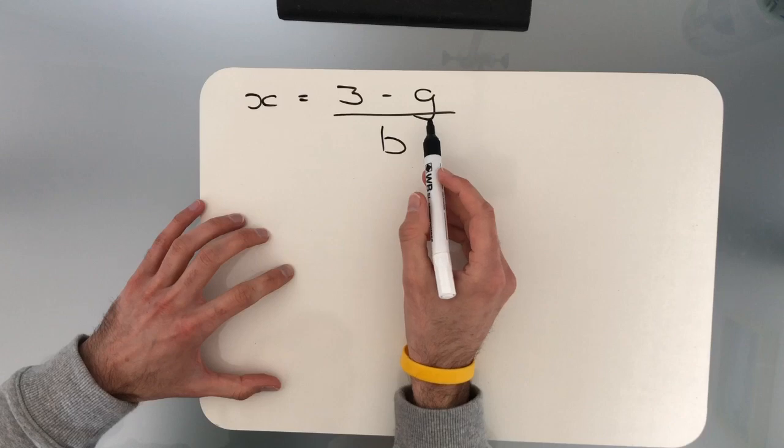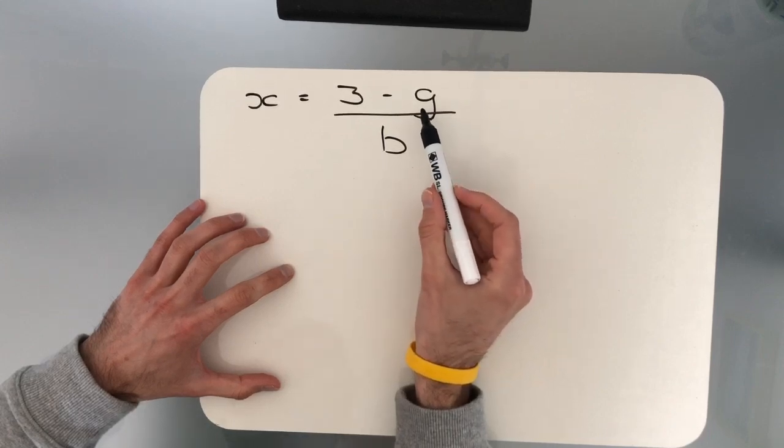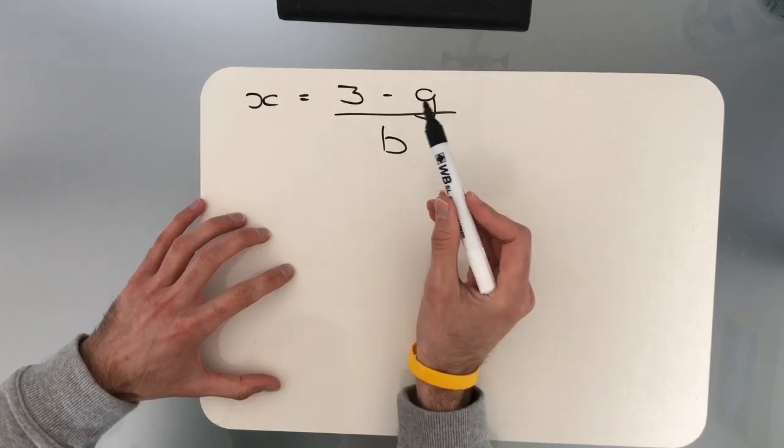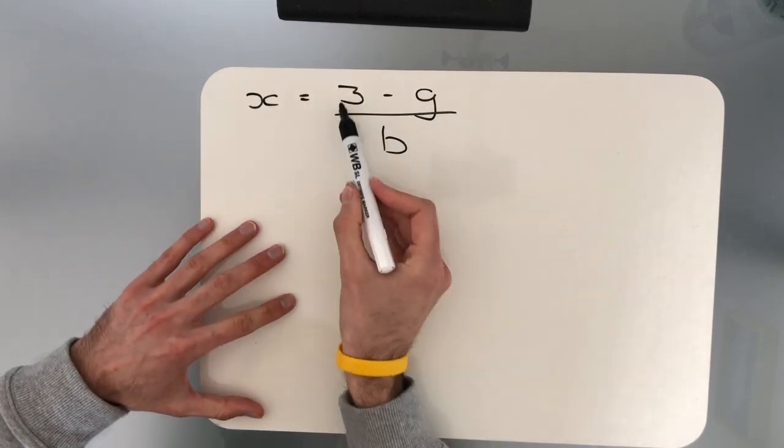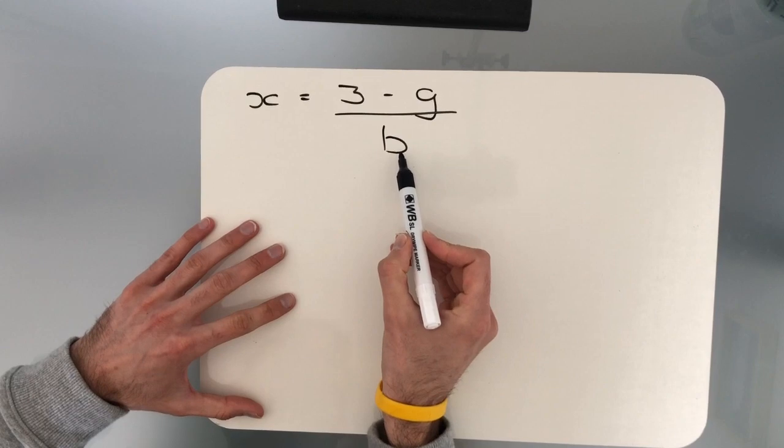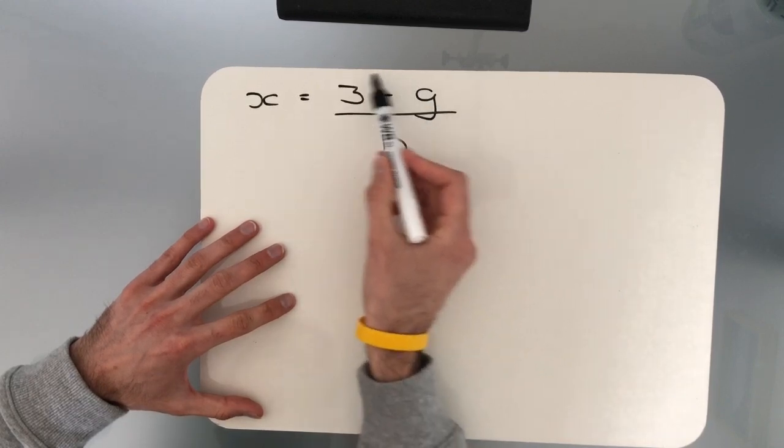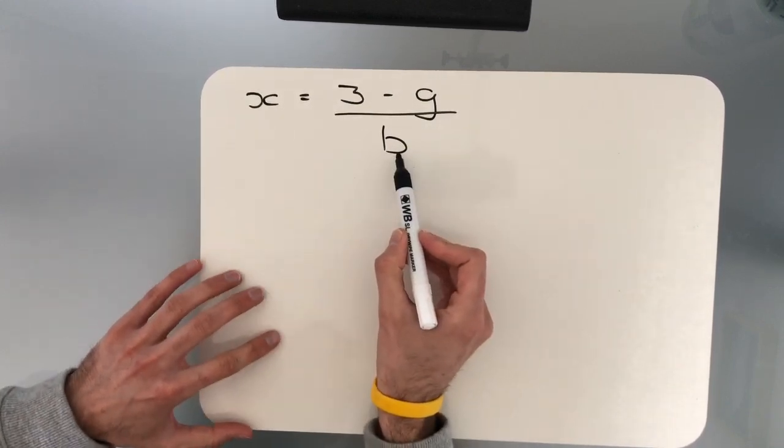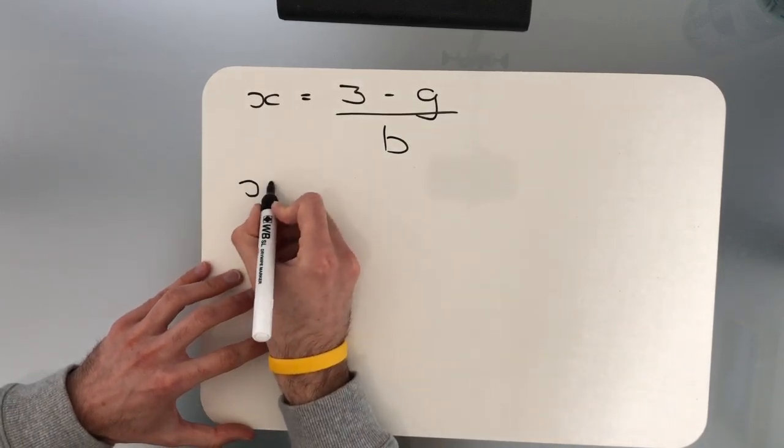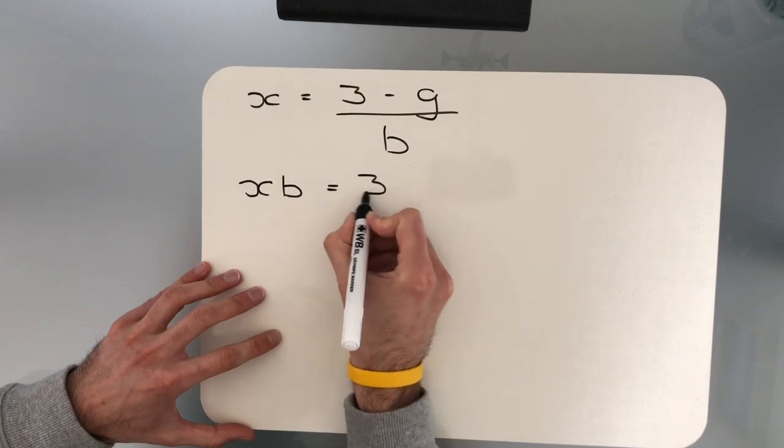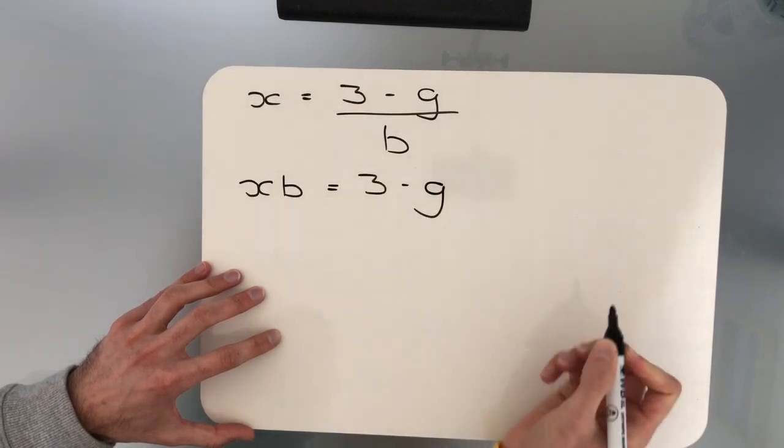Slightly more tricky one this time. We want to leave the letter G as the subject of the formula. We're still applying the rules of BIDMAS in reverse. However, if you look here, the full entire numerator is being divided by the letter B. So to allow us to free this up, we're going to have to remove this B. So it's currently dividing. So when we take it over, it will multiply to give us XB is equal to 3 subtract G.